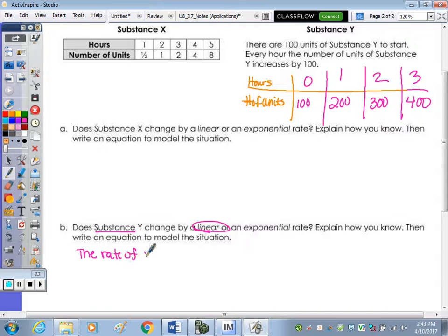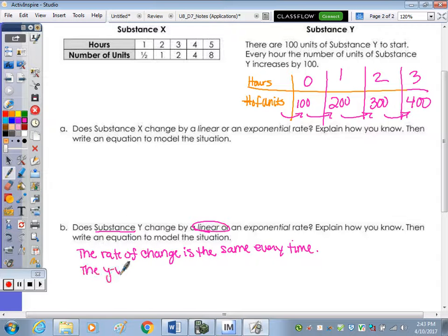The rate of change is the same every time. We're also, as X increases by one, what's going on with the Y values? Are you seeing addition or multiplication? Addition. Addition. Okay. The units of the substance are repeatedly adding how many? 100.